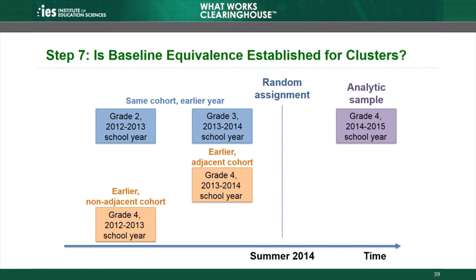However, when there is concern that the clusters might change substantially over time, using non-adjacent cohorts to demonstrate cluster equivalence might not be appropriate, and the protocol may not allow this approach. For example, when the intervention is a charter school network, the protocol might not allow non-adjacent cohorts due to concern that enrollment eligibility rules may have changed over time. The students in the schools in prior years may have different characteristics from those enrolled during the study period. The protocol will specify which of these samples are appropriate to use when establishing cluster equivalence.